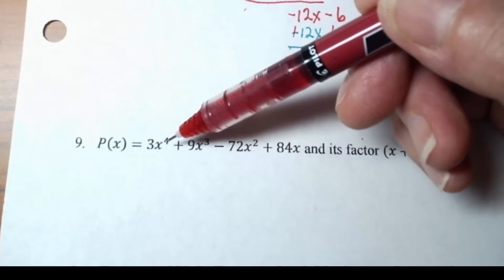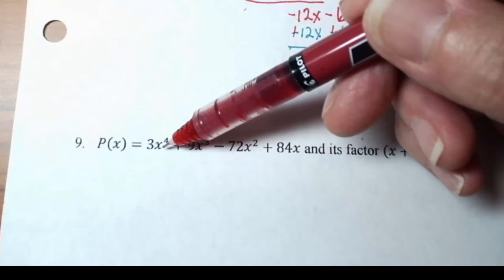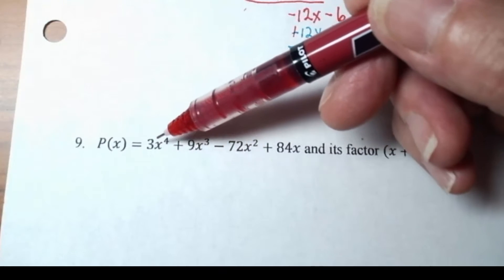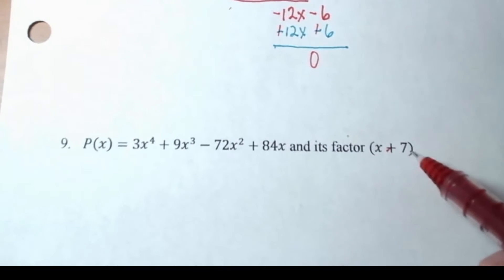Now we have an x to the fourth, you see that? We have a degree four polynomial, but here's the good news. This is an x plus seven, so we can use our synthetic division.